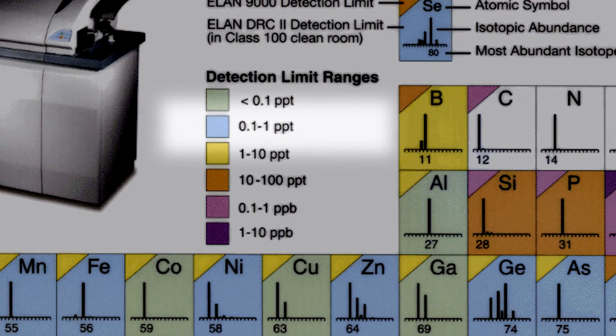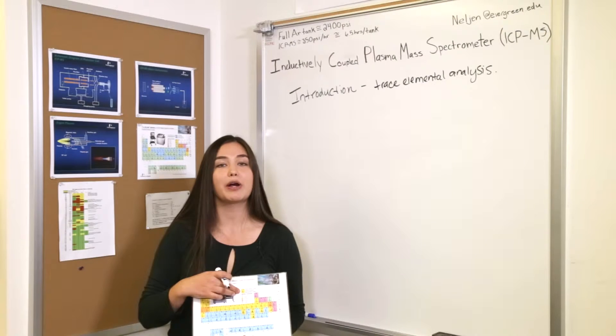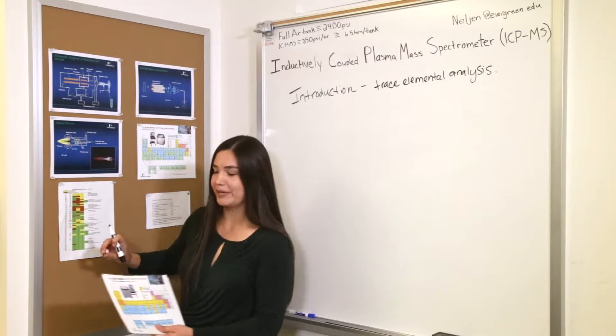You can see that the blue colored tiles are our lowest detection limits, and these are in the 0.1 to 1 part per trillion range. So we can look for very low concentrations of those elements.